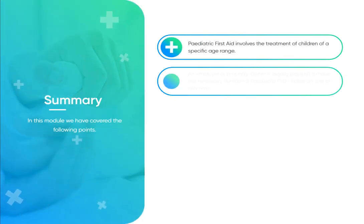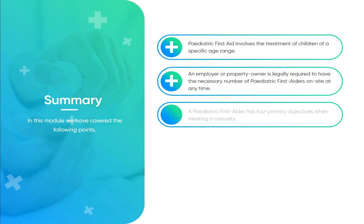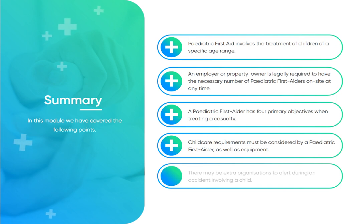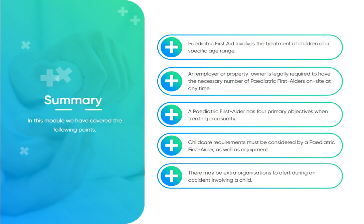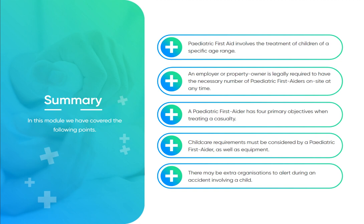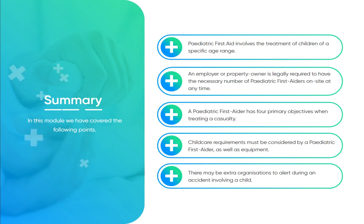In summary, this module has covered the following points: Paediatric first aid involves the treatment of children within a specific age range. An employer or property owner is legally required to have the necessary number of paediatric first aiders on site at all times. A paediatric first aider has four primary objectives when treating a casualty. Childcare requirements, equipment needs, and the possible involvement of extra organisations during a child-related accident must all be considered.